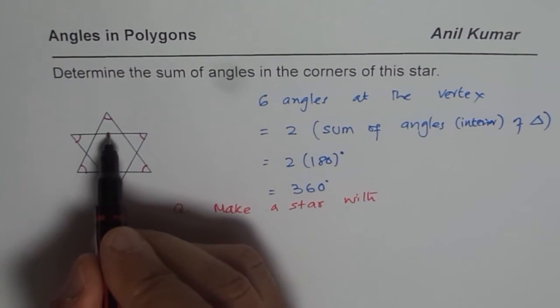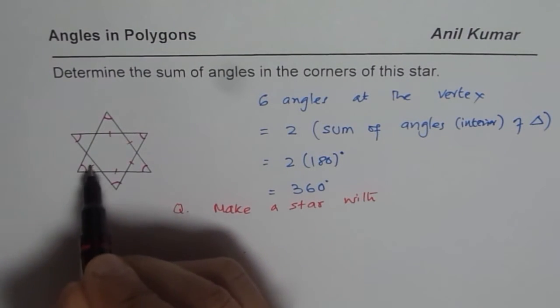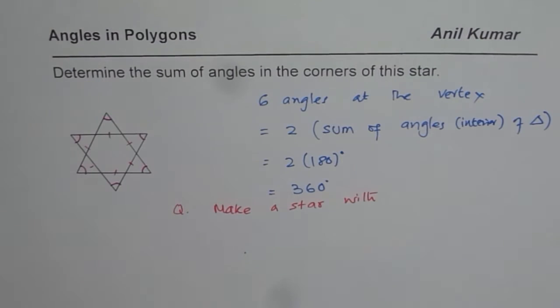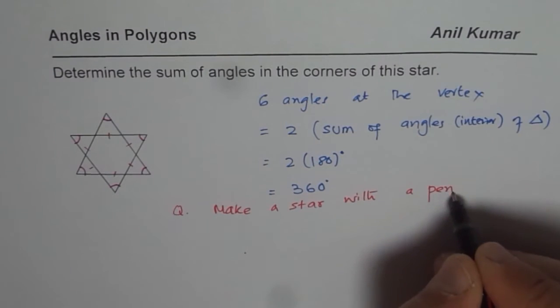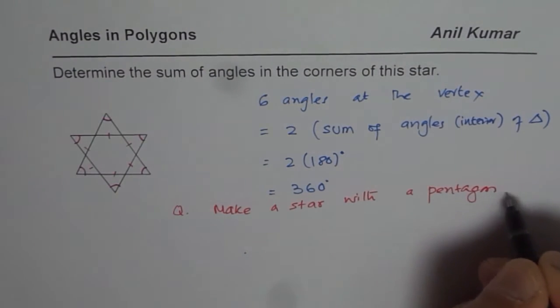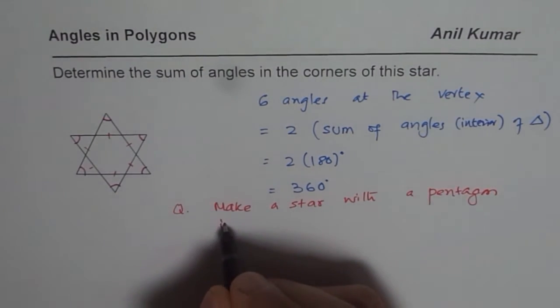So we have how many sides? 1, 2, 3, 4, 5, 6 sides in the center. So make a star with a pentagon inside.